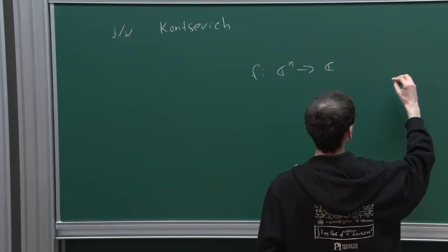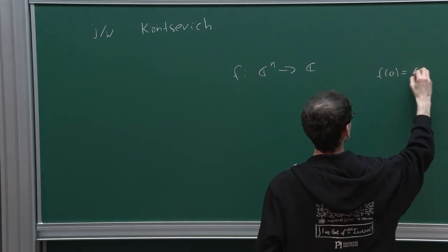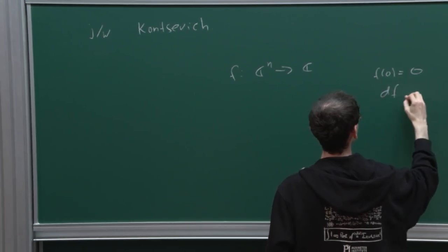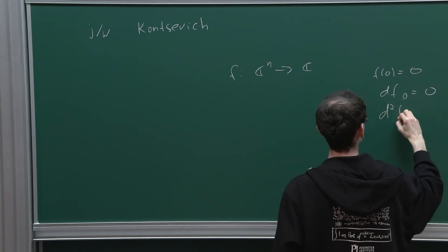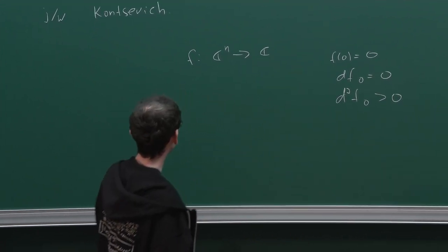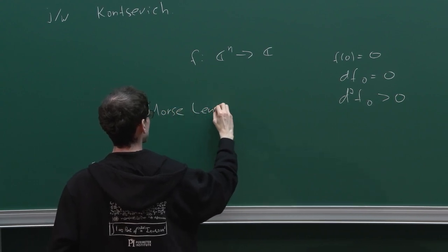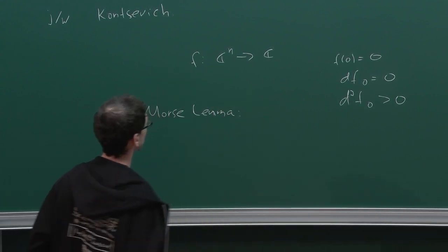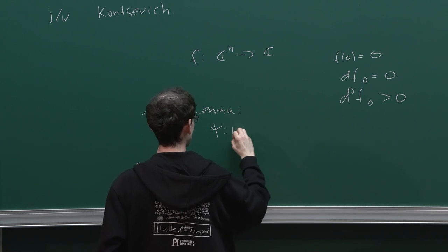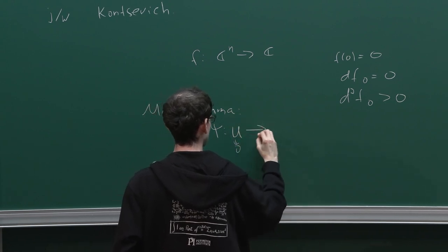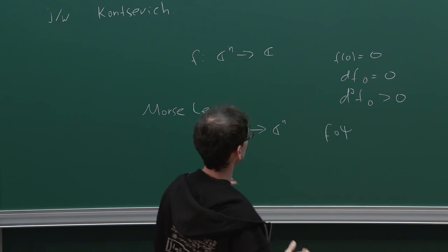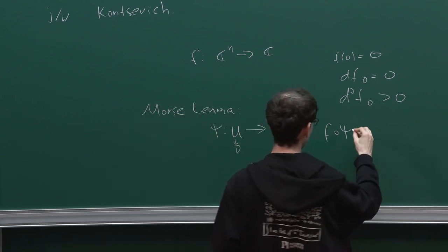So if you have a function on C^n and this function has a non-degenerate critical point at zero — meaning that the determinant of the Hessian is positive and the derivative is zero — then the Morse Lemma tells you that you can do a local coordinate transformation to turn it into a sum of squares. So this thing has a local normal form that looks like the sum of squares.